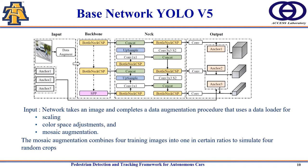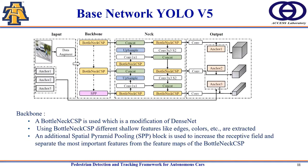After augmentation, the augmented image is fed into the backbone of the network. In the backbone section, a Bottleneck CSP — a modification of DenseNet — is used. Using Bottleneck CSP, different shallow features like edges and colors are extracted and learned during training. Additionally, a Spatial Pyramid Pooling (SPP) block is used to increase the receptive field and separate the most important features from the feature maps.